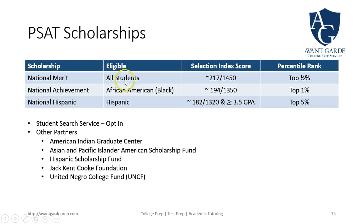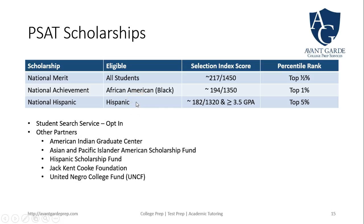For PSAT scholarships: the National Merit award is for all students, and in Texas the index score needed is about 217 out of 240, or roughly 1450 out of 1600 on the SAT. National Achievement, for African American students, requires approximately 194 out of 240 or 1350 out of 1600 — the top 1%. The National Hispanic Recognition Program, for students of Hispanic or Latino origin, requires approximately 182 for the Southwest region, or about 1320 on the SAT, along with a GPA above 3.5, placing in roughly the top 5%.